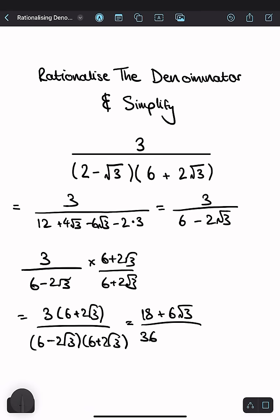Then minus 2√3 times 2√3 is minus 4 times 3, because √3 times √3 is just 3. Now if we simplify our denominator, we get 18 plus 6√3 over 36 minus 12 is 24.